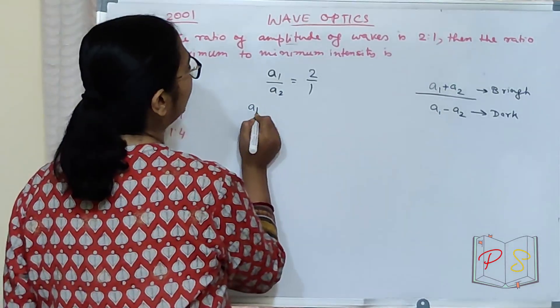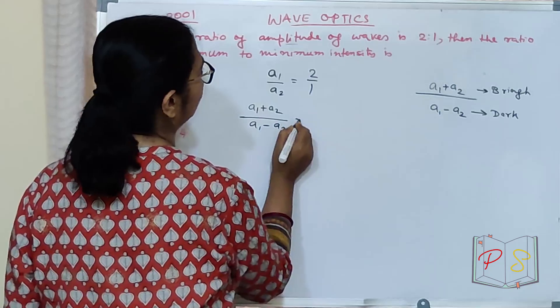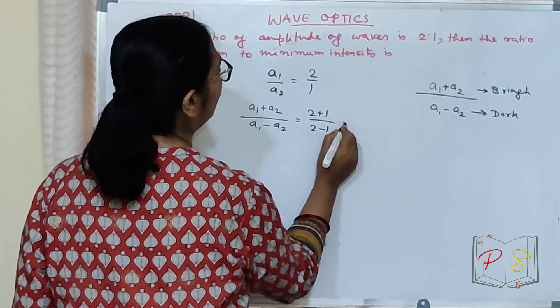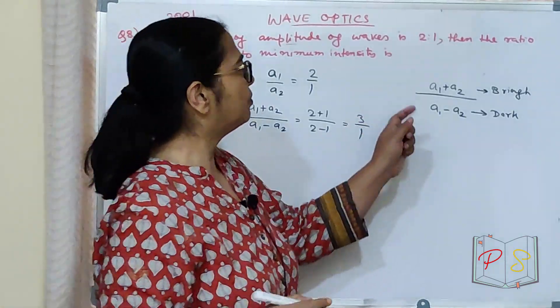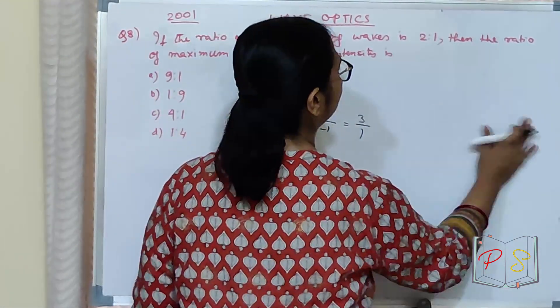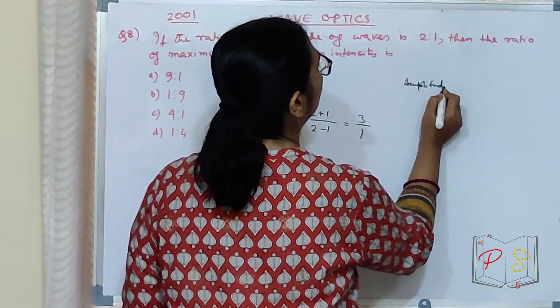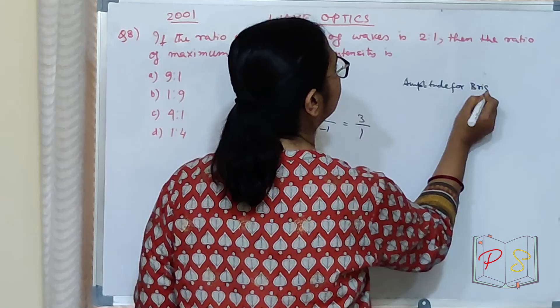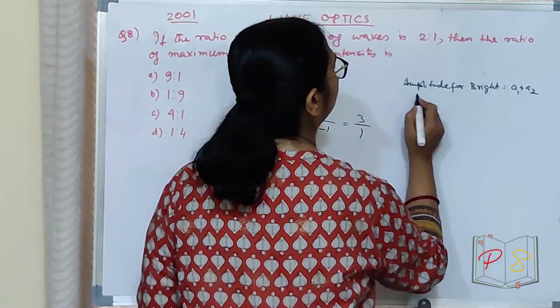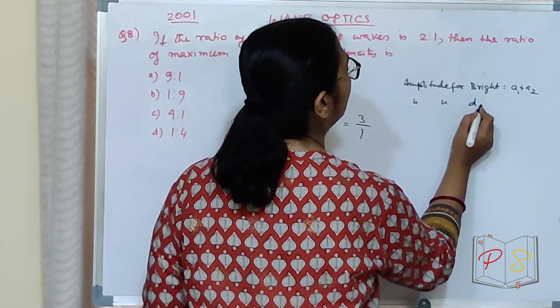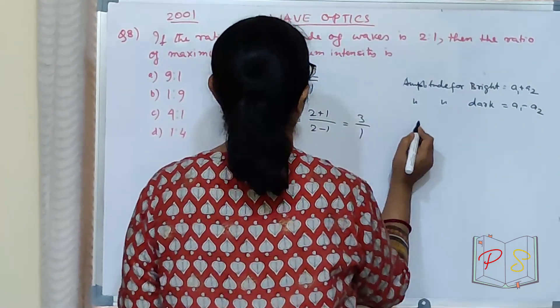So I'll write A1 plus A2 divided by A1 minus A2 equal to 2 plus 1 by 2 minus 1 equal to 3 by 1. This is what? Amplitude for bright, A1 plus A2. Amplitude for dark equal to A1 minus A2.